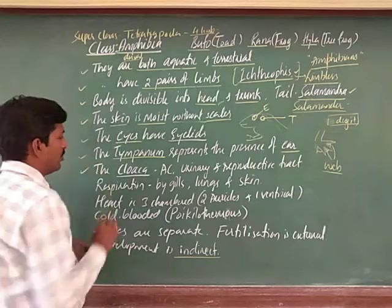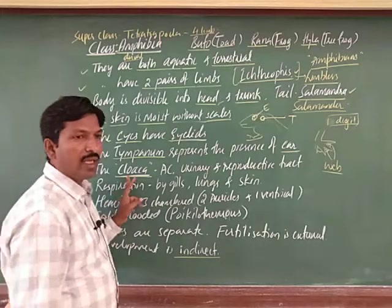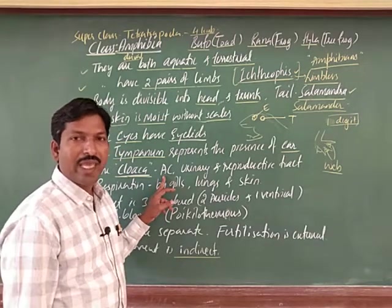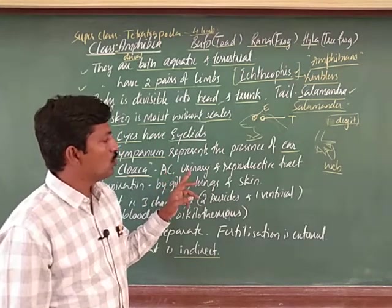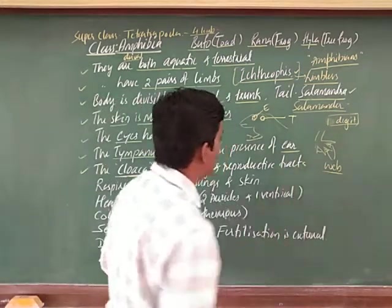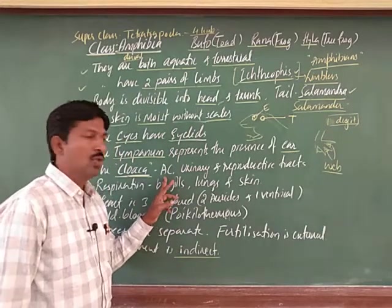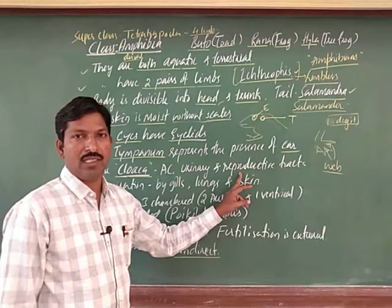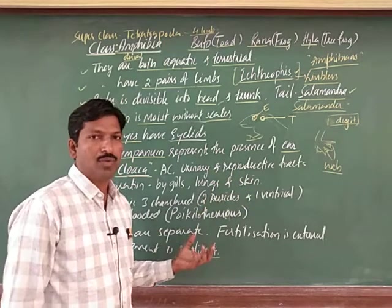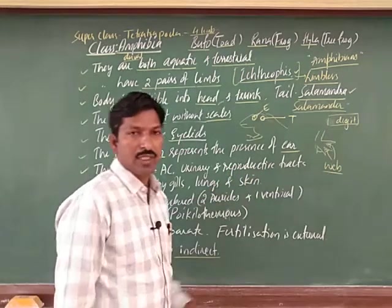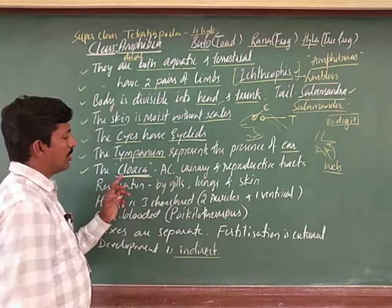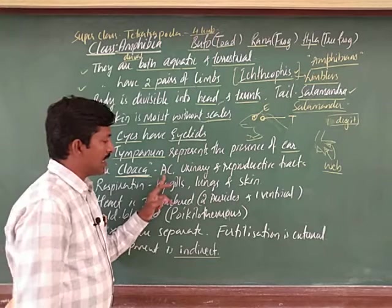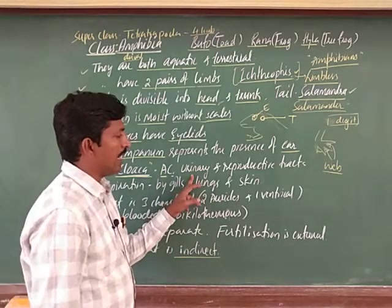There is a structure called Cloaca. Cloaca is a common external opening — at the end of the alimentary canal there is usually an opening, but here the same opening also receives the urinary tract and reproductive tract. So this common opening is for exit of urine, undigested food, as well as release of eggs.